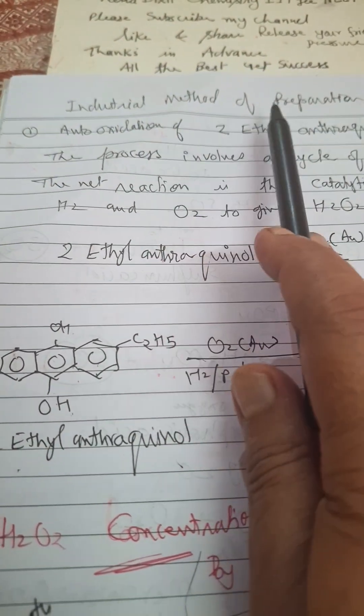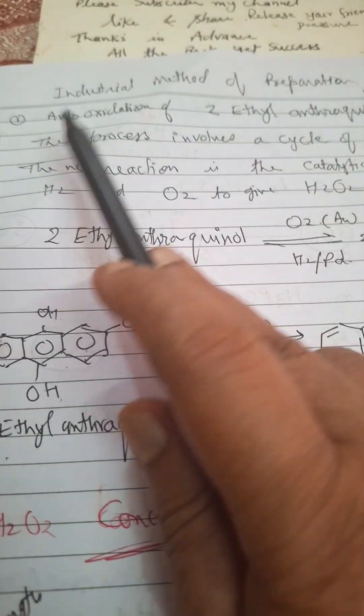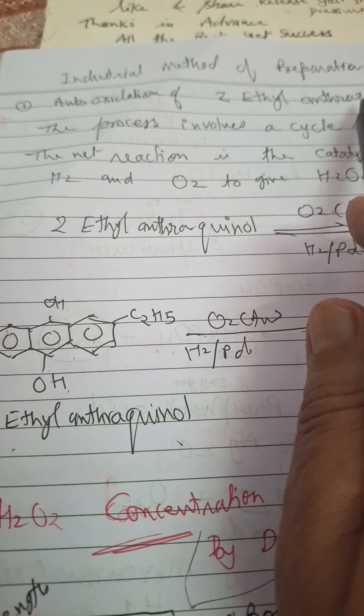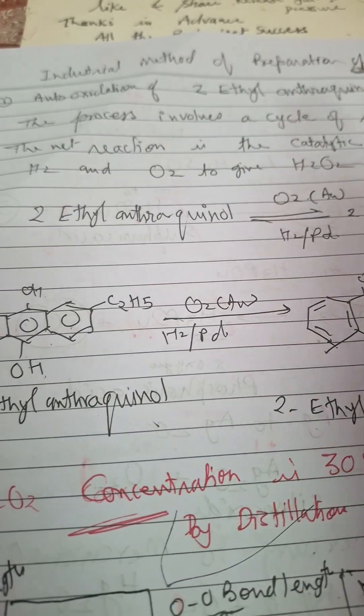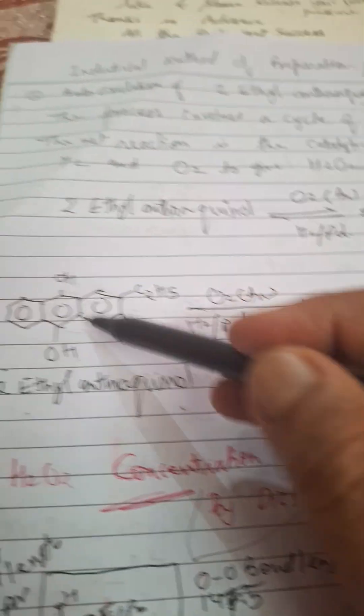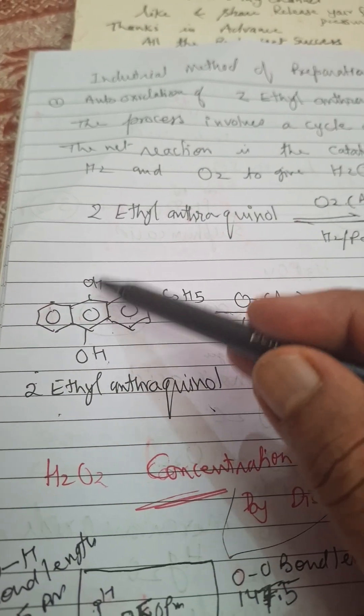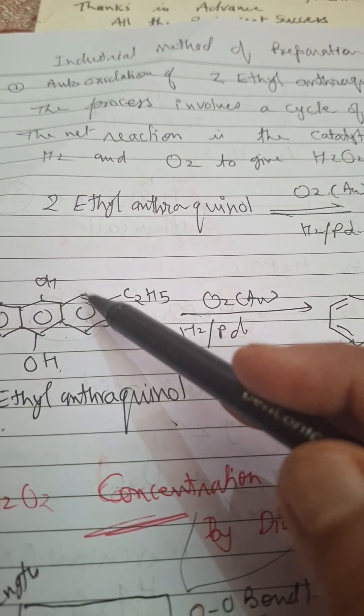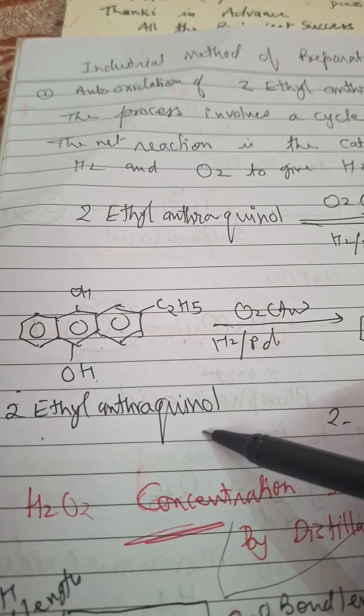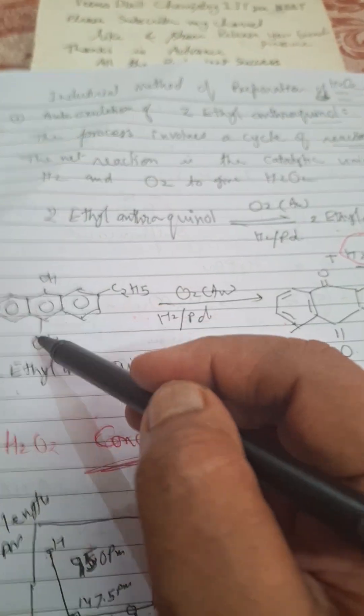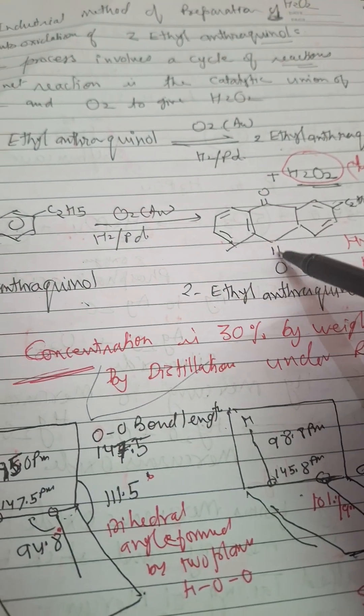Hello students, we discuss here industrial method of preparation of H2O2, auto oxidation of 2-ethyl anthraquinone. This is quinol, this structure has three benzene rings fused and OH groups at para position to each other. This is 2-ethyl anthraquinone.